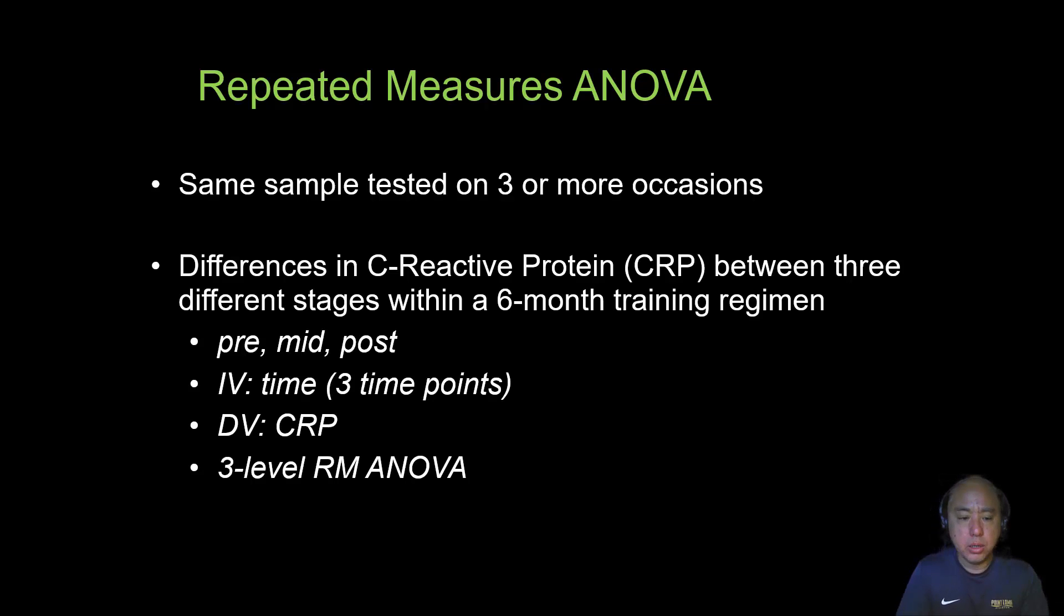I'll give you another example here, and we'll do this in RStudio. Researchers want to know the differences in C-reactive protein or CRP. This is an indicator for cardiovascular disease or the risk of cardiovascular disease. They wanted to compare them between three different stages within a six-month training regimen. So the three time points happen to be pre, mid, post. That's the independent variable, three levels of the independent variable of time points. The dependent variable is CRP because that is an indicator of cardiovascular disease. The lower that number, the better. So we're going to use the three-level repeated measures ANOVA, and we're going to go ahead and try this in RStudio.